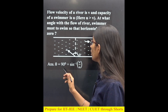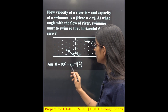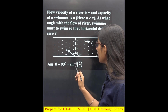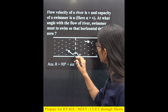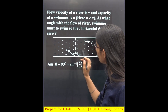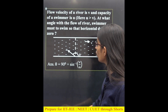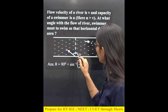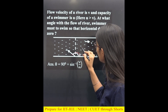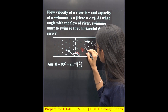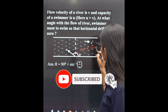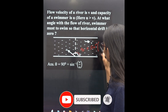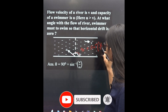The angle theta equals 90 degrees plus sine inverse of V by U. So the angle value will be 90 + sin⁻¹(V/U).